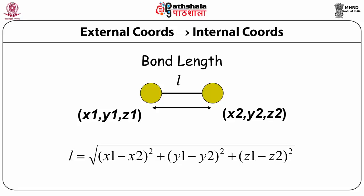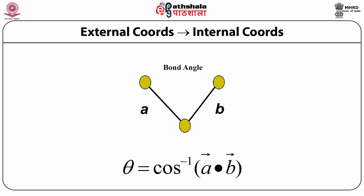Now let's see whether the two representations — external and internal — are equivalent. Given a set of external coordinates can we calculate the internal coordinates, and vice versa? For bond length: in external coordinates every bond has two atoms with coordinates x1y1z1 and x2y2z2. The bond length is the Euclidean distance between these two atoms. Applying that formula, given a set of external coordinates you can always calculate all the bond lengths.